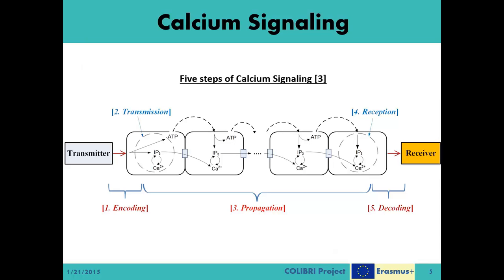We can ask: for how long do IP3 molecules originated from the initial cell move through the channel? Actually, they do not move more than one or two cells. However, there is a positive feedback loop between the increased cytosolic concentrations of IP3 molecules and calcium ions, which enables the signal to be practically regenerated at each cell along the channel. According to biological ICW models, in addition to signal regeneration through IP3 molecules, there is another way of signal regeneration very similar to the basic CVD system utilizing ATP molecules. For simplicity, in this module we will not be focusing on this ATP-based external pathway method of the ICW mechanism.